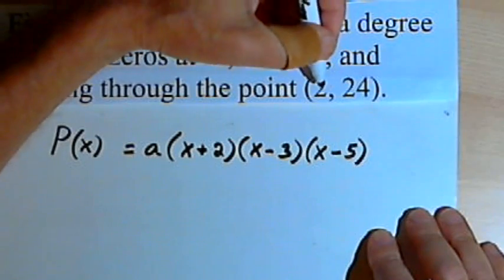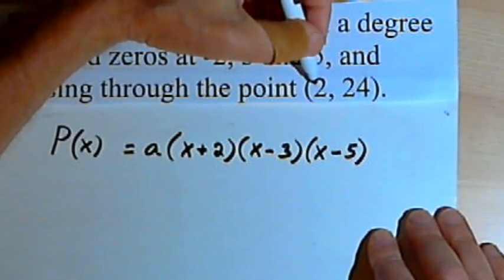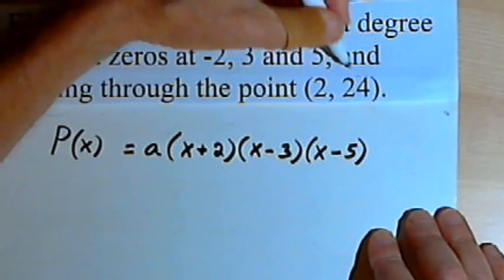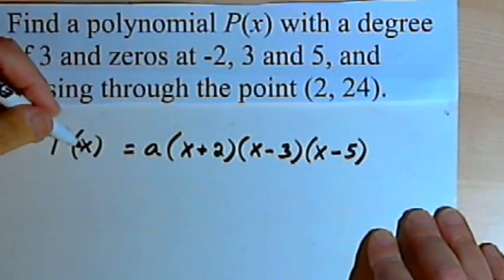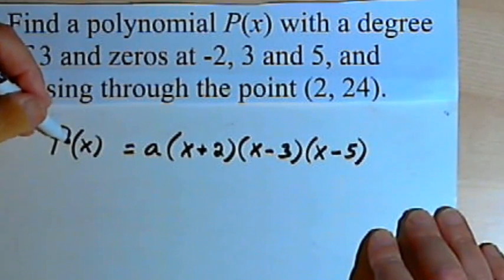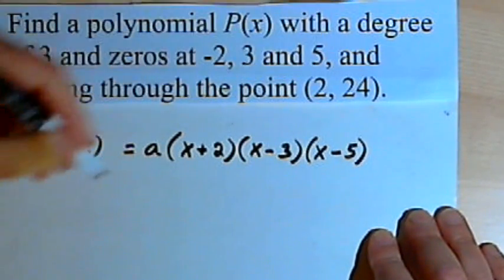I'm going to do it this way. I'm going to take that point (2, 24), and remember that the 2 is an x-value, the 24 is a y-value. So I'll take the P(x), which is like a y, and replace that y with 24.